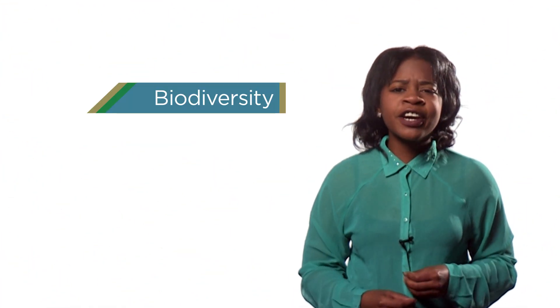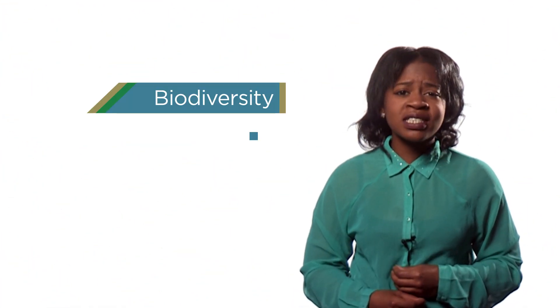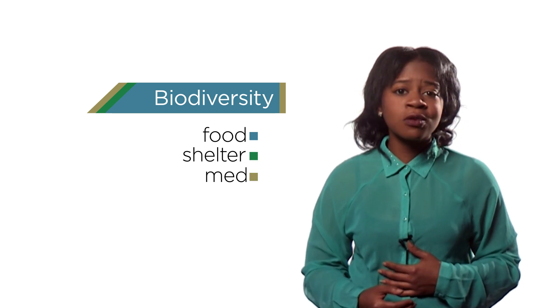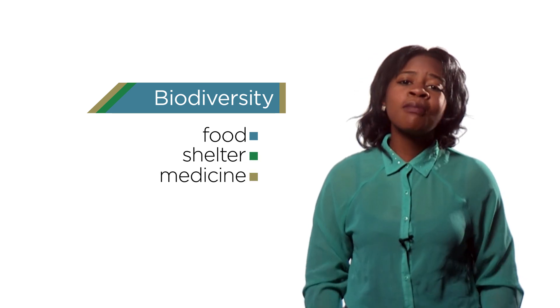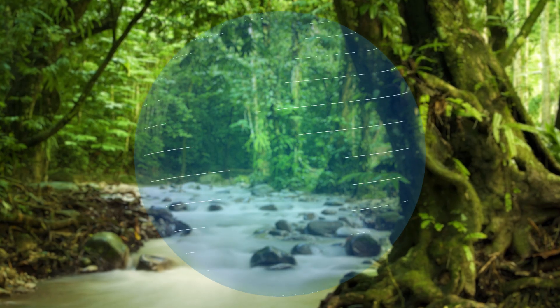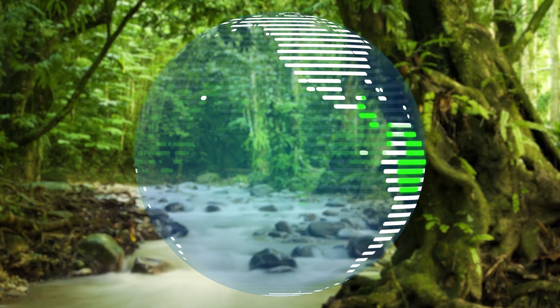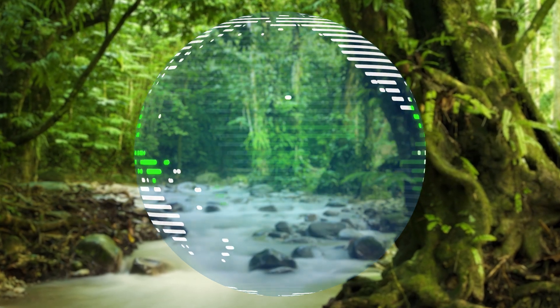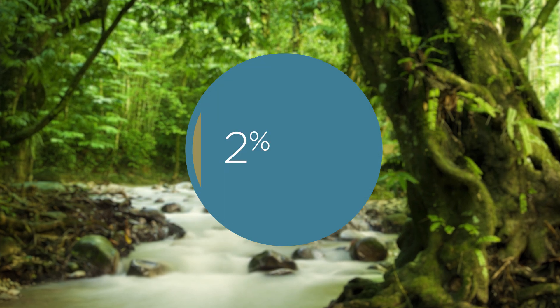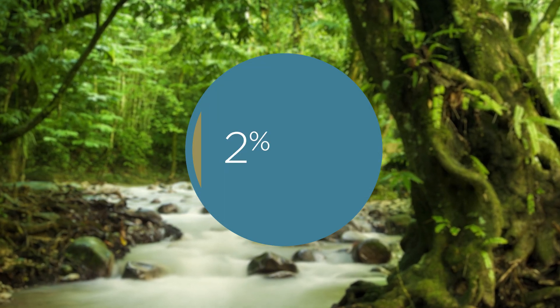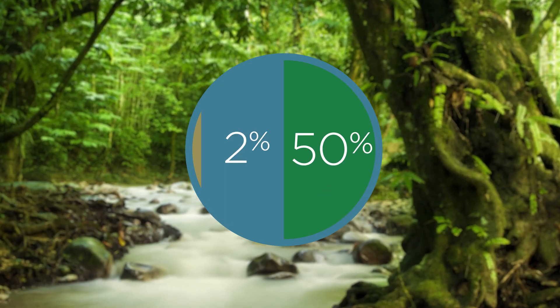Biodiversity is also very important to humans. Our food and shelter comes from plants and animals, and we get most of our medication from the tropical rainforests. These rainforests are considered to have the highest biodiversity in the world. Covering less than 2% of the Earth's total surface area, rainforests are home to more than 50% of the planet's plant and animal life.